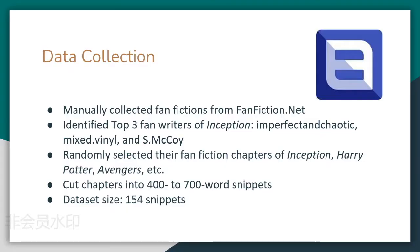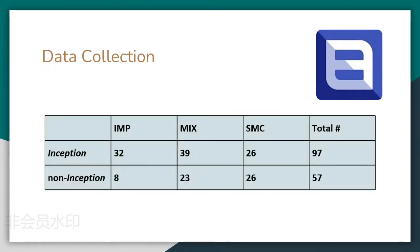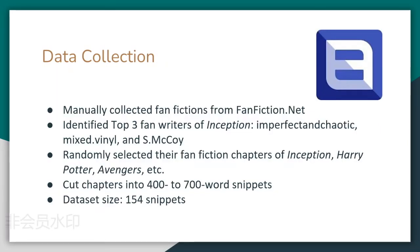We collected our data from fanfiction.net, which is the most popular and famous web fiction archive, and we focused on the famous movie Inception. We identified the top three fan writers of Inception and randomly selected their fan fiction chapters. They also produced some fan fictions of other works such as Harry Potter or Avengers, but most of their work are fan fictions of Inception. We cut chapters into snippets, and each snippet serves as a sample consisting of 400–700 words. We have a total of 154 of them, which is still a relatively small dataset size.